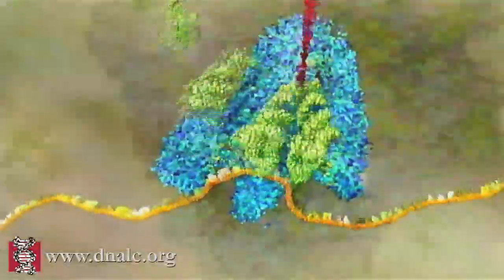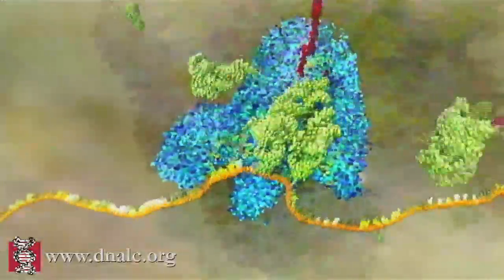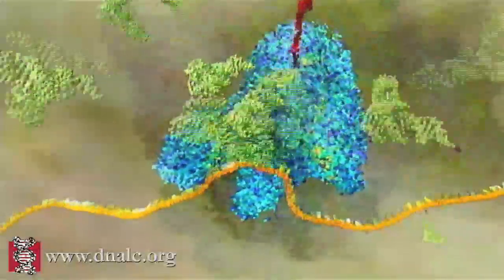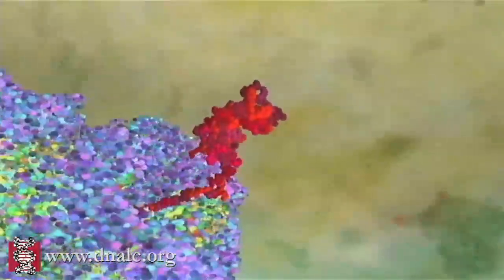In this case, the end product is hemoglobin. The cells in our bone marrow churn out a hundred trillion molecules of it per second.